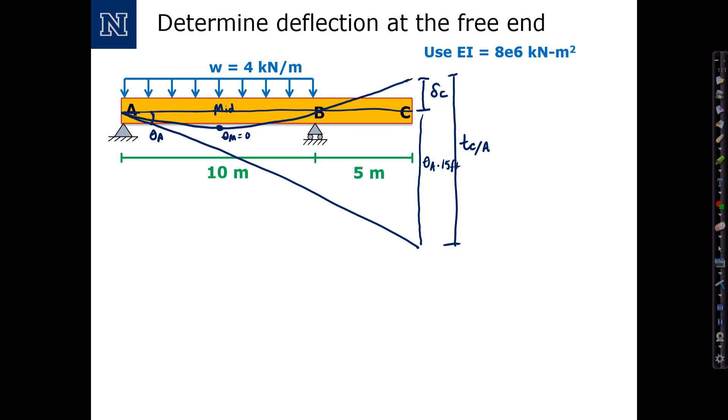So let's summarize that. We have theta A is equal to the area over EI from A to the midpoint. I'm not worrying about the signs too much because I can figure them out by inspection.